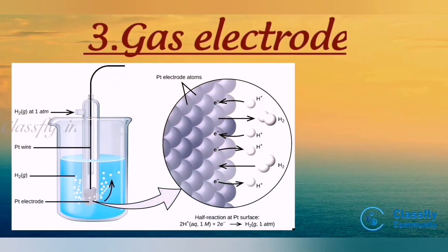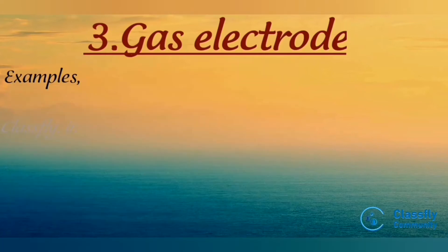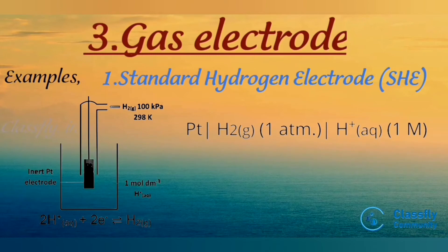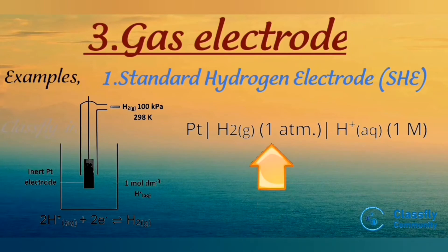The potential of the gas electrode depends upon the concentration of its ion in the solution and the pressure of the gas. A gas electrode consists of a gas bubble around an inert metal wire immersed in a solution containing the relevant ion. An example is the standard hydrogen electrode, represented as: Pt | H₂(g, 1 atm) | H⁺(aq, 1 M). The potential depends on H⁺ concentration and gas pressure at 1 atmospheric pressure.